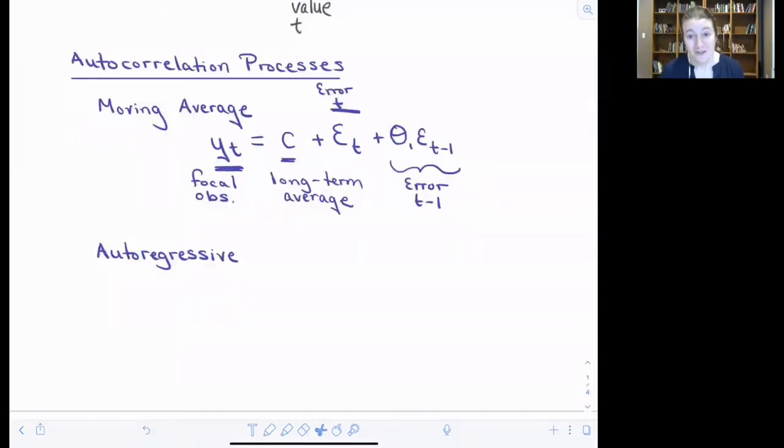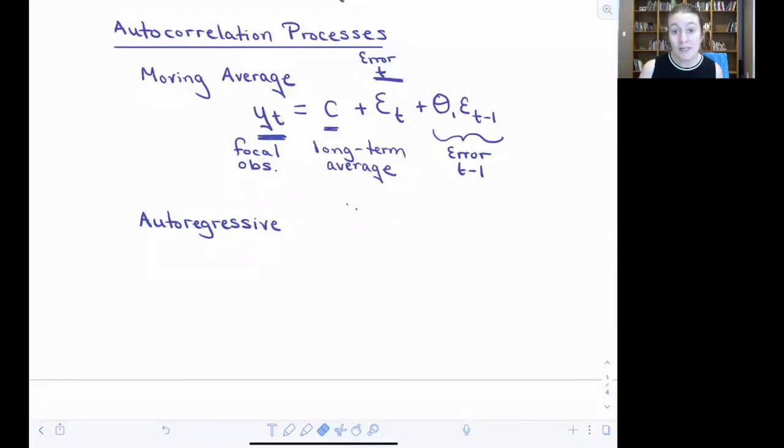So the rodents are really this other process, and that's an autoregressive process. An autoregressive process is probably what you have had in your head as you've been thinking about autocorrelation all along, which is the idea that the value that you see in the past has an influence on the value that you see in the future.